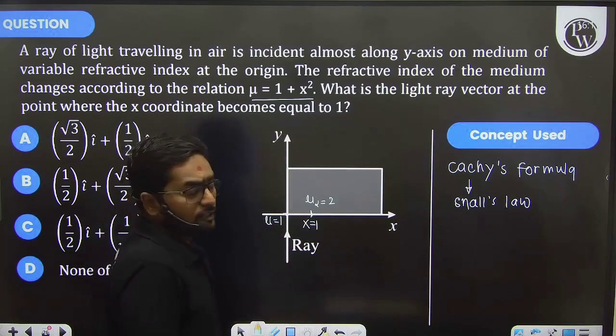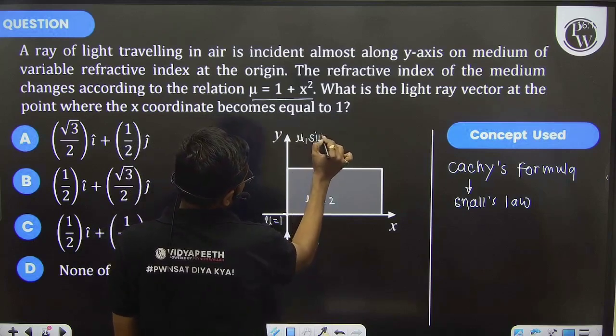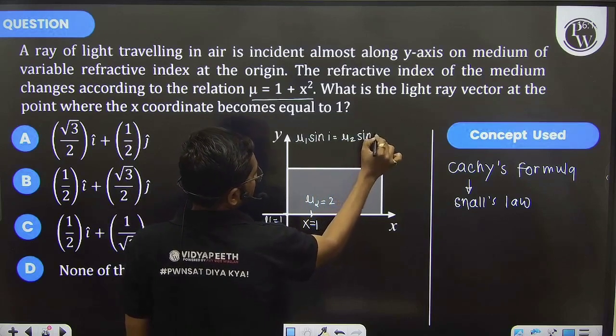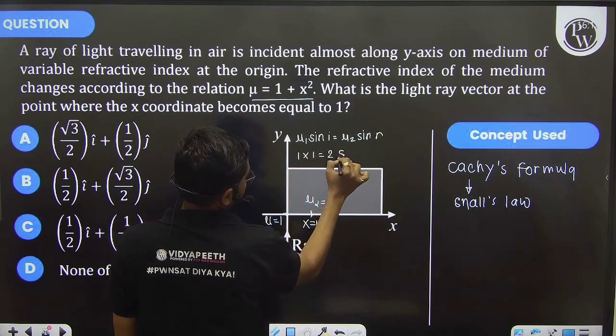Now you can use Snell's law here for these two coordinates. So mu1 sin i equals mu2 sin r. This is 1, this is 1, this is 2, this is sin r.